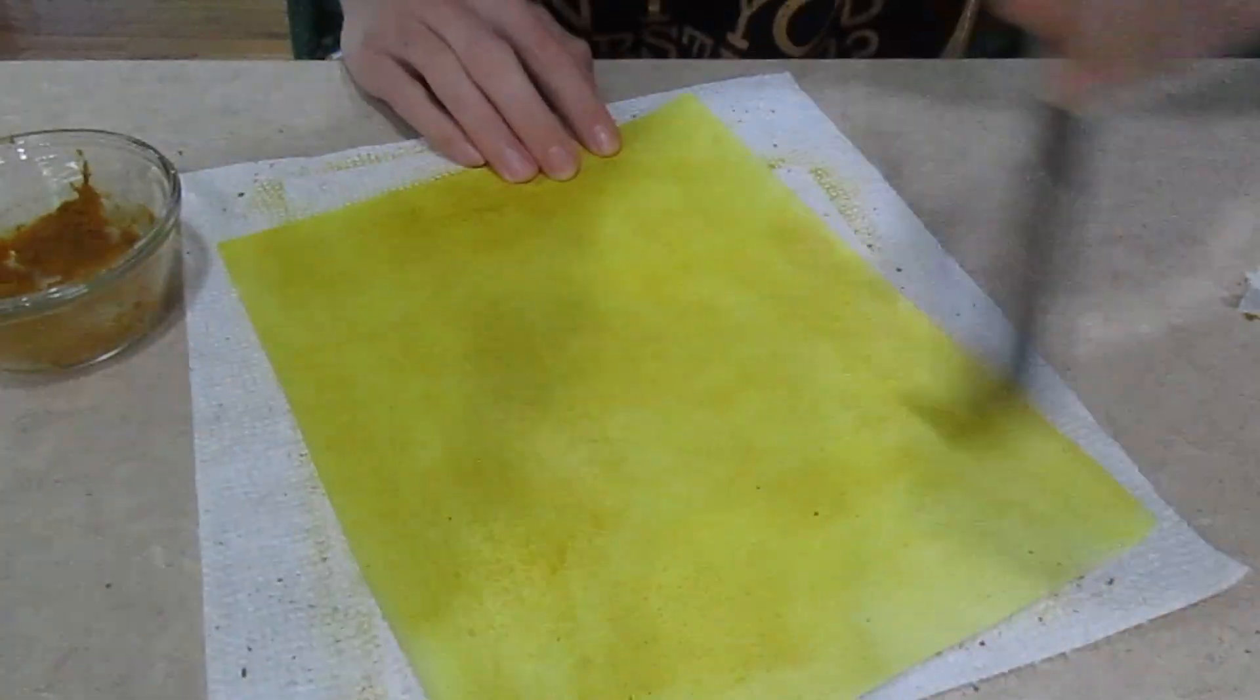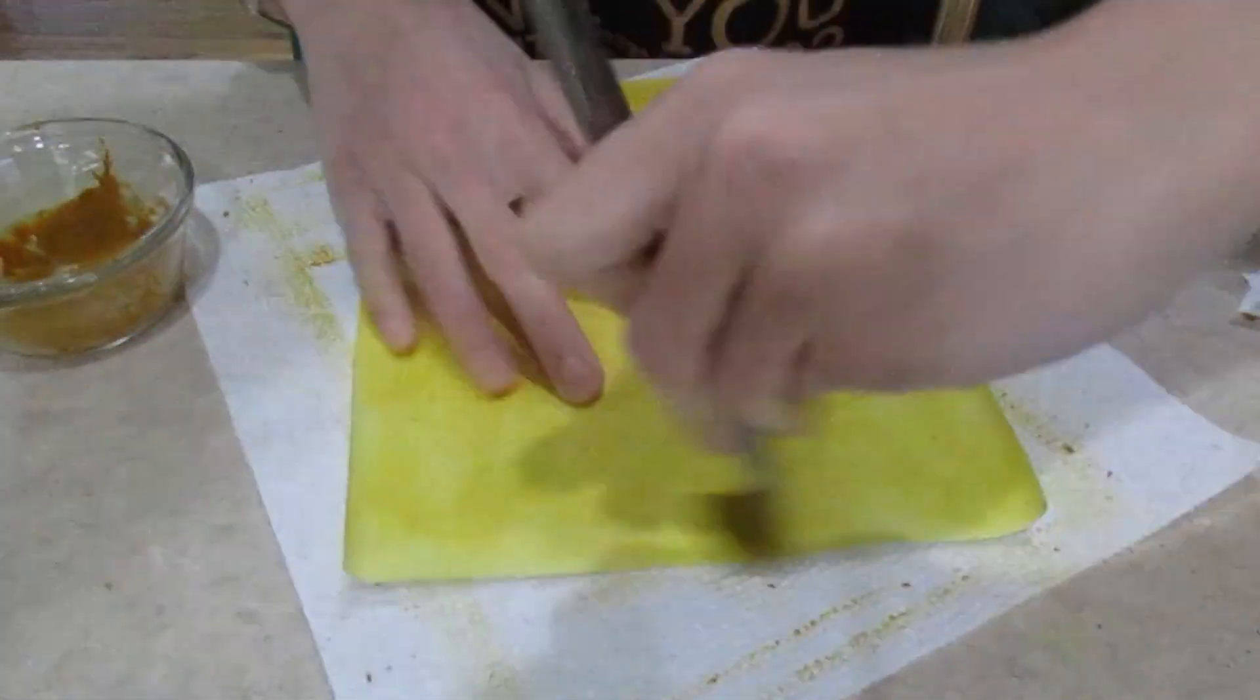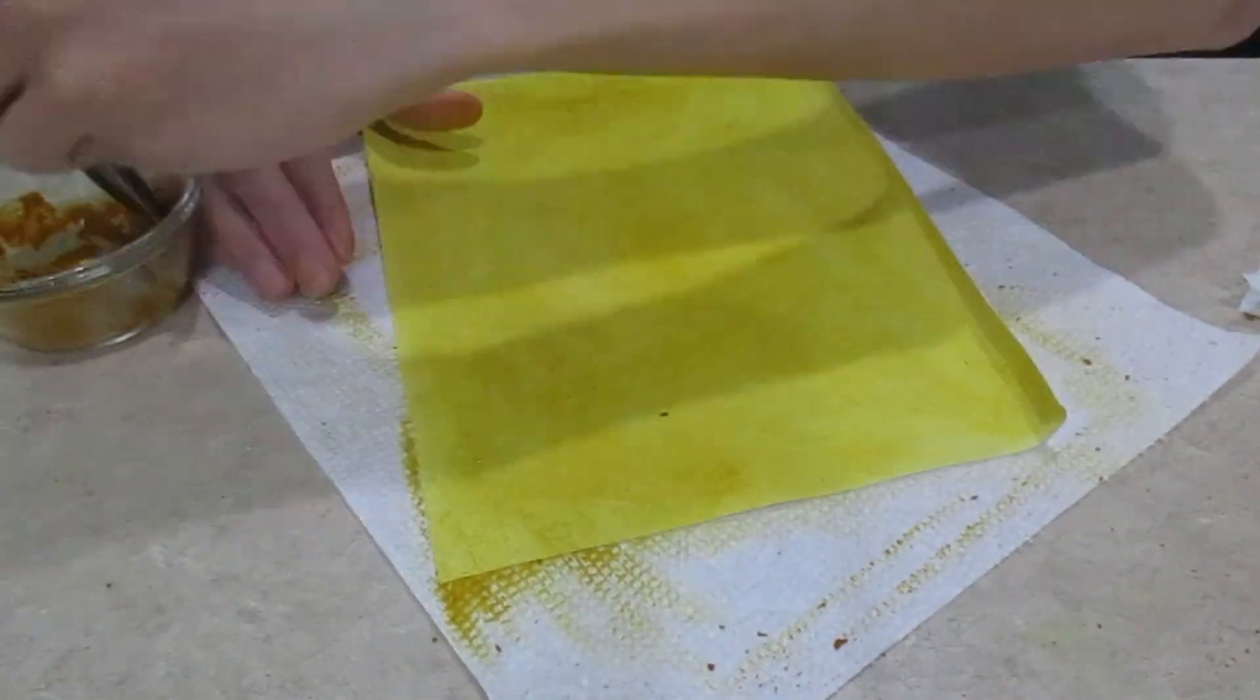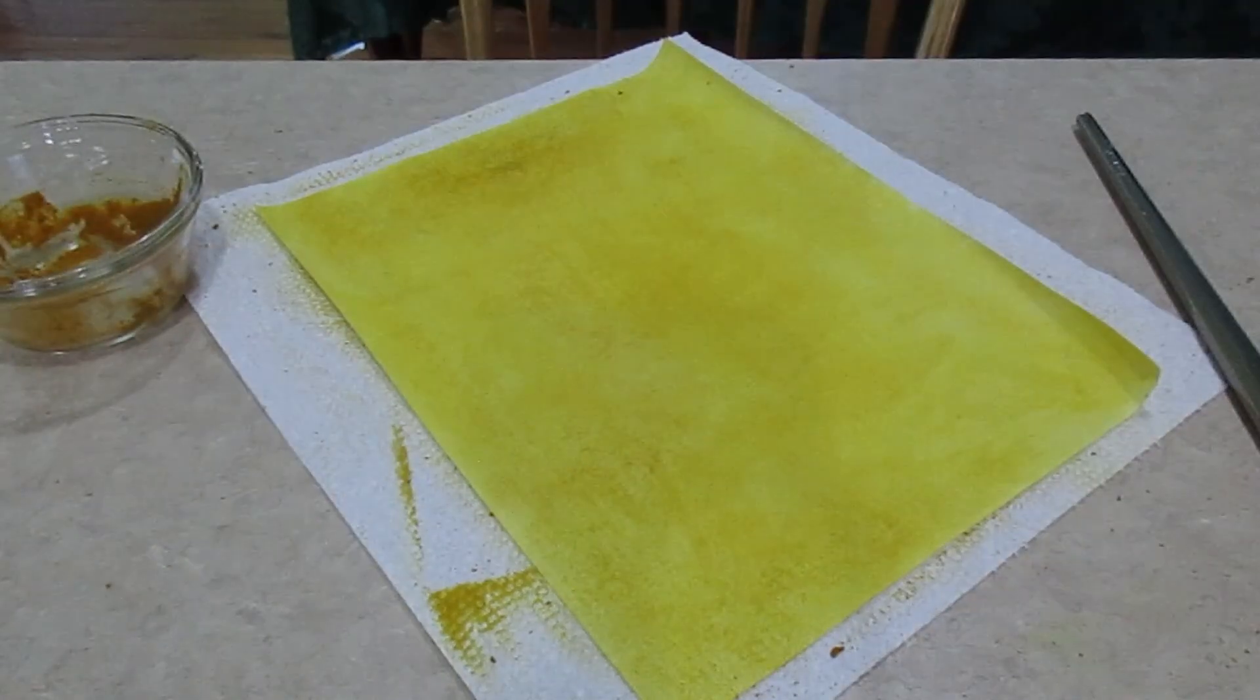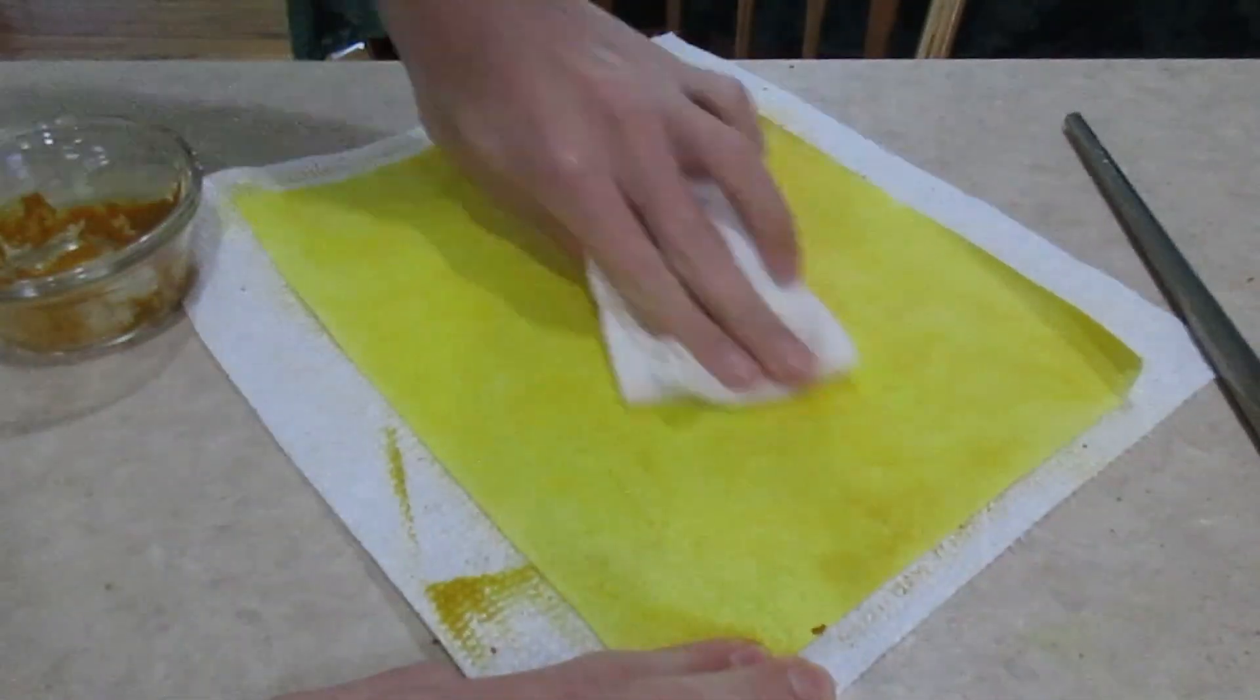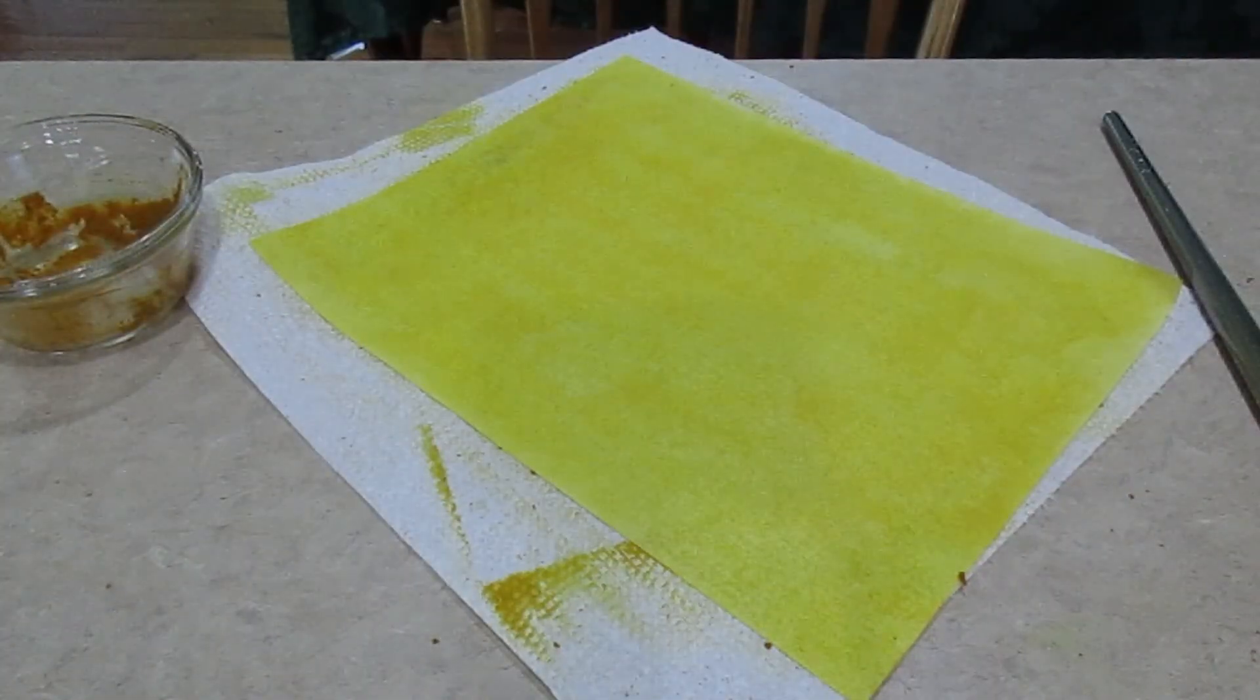So when I am finished painting, I put some vinegar on a paper towel and wipe the sheet down with it. You can see it turns a little bit brighter. And that's because when it's brighter, it's more susceptible to being bleached by the sun, which is what causes it to be photosensitive.